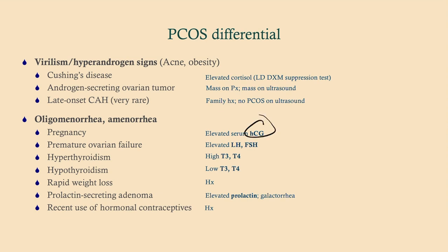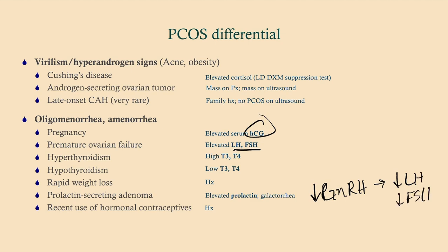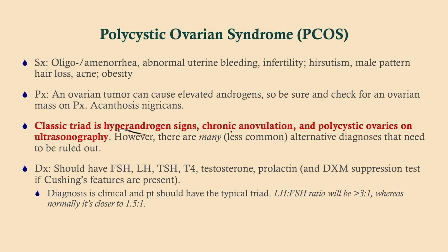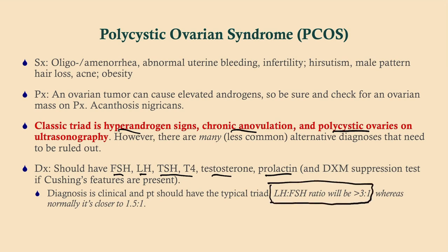Anytime you have a woman coming in saying she hasn't had her period, a pregnancy test should be a knee-jerk reflex. Premature ovarian failure can happen in women under 40 — look for elevated LH and FSH. Hyper- and hypothyroidism should be considered, and certainly a prolactin-secreting adenoma — remember, prolactin-secreting adenomas decrease GnRH, leading to low levels of LH and FSH. The workup includes FSH, LH, thyroid function tests, testosterone level, prolactin level, and if they have Cushingoid features, a dexamethasone suppression test.